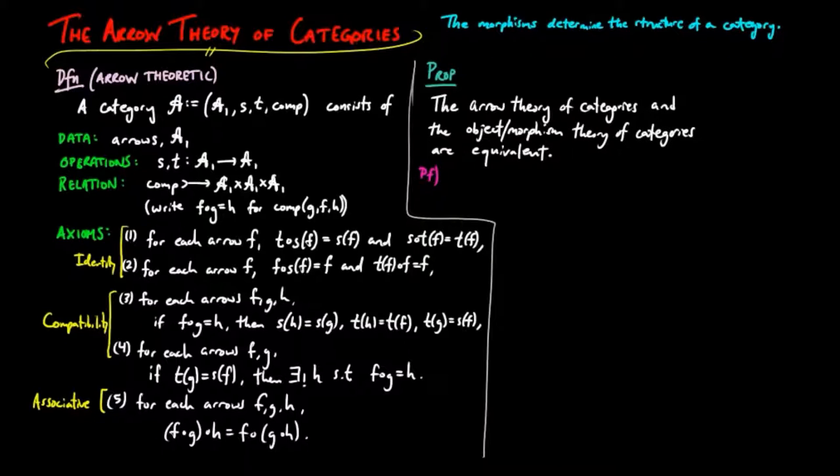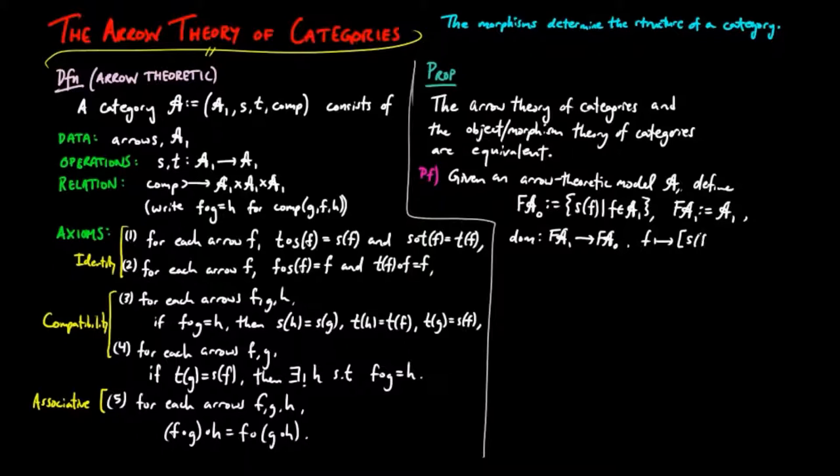We sketch such a proof. Given an arrow theoretic model A, define objects f, A0 to be the collection of all sources of all arrows in the category A, and morphisms defined to be the arrows in the category A. And we have the operation domain, which takes a morphism f to the object, the source of f.